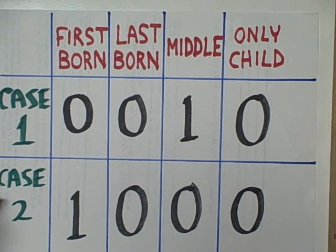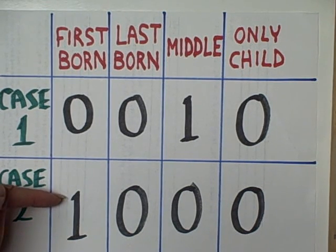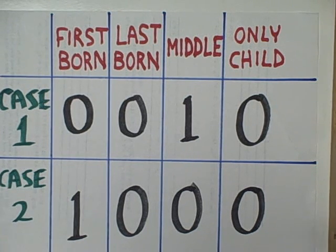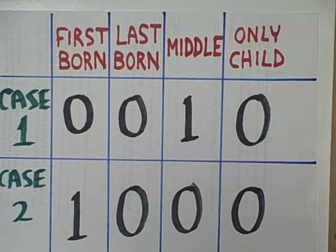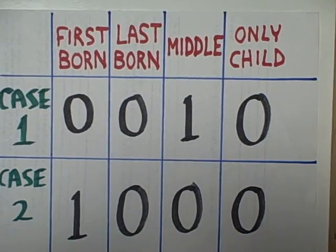Case number two is an individual who has a younger sister and that's it, so this individual would qualify as firstborn. Type in a one for yes under firstborn and enter a zero for no for the other categories. That's the best way to handle multiple nominal scaling.